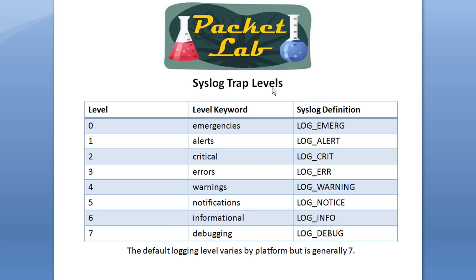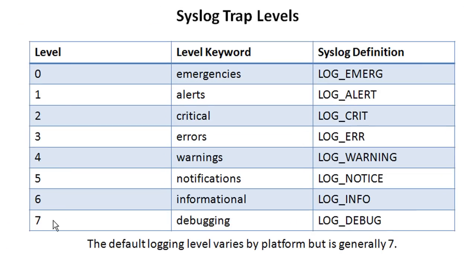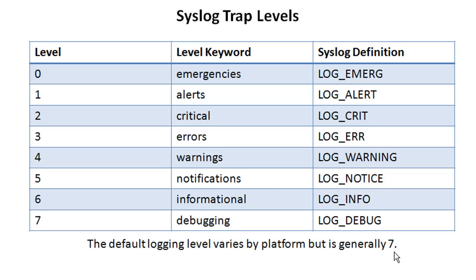So this is the syslog trap levels. As you can see, there are eight of them, zero through seven, and there's a keyword that corresponds with each one. As I said earlier, you can use either the numerical value or the level keyword. So if you say logging trap errors, that's the same thing as saying logging trap three. It does say that the default varies by platform but is generally seven.